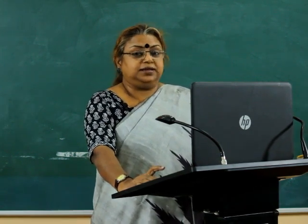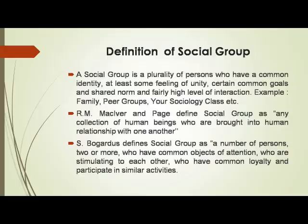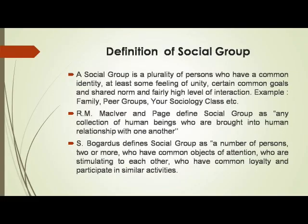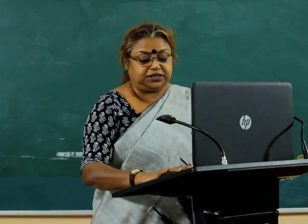MacIver and Page define social group as any collection of human beings who are brought into human relationship with one another. Bogardus defines social group as a number of persons — two or more — who have common objects of attention, who are stimulated by each other, who have common loyalty and participate in similar activities.